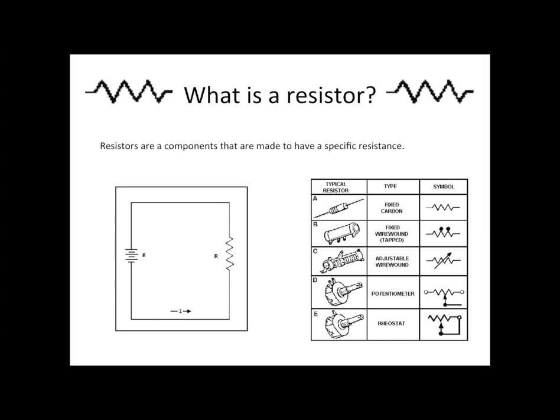If you look over on the right side here, we have different types of resistors. Fixed carbon is probably one of the most common ones you're going to run into. If you look over to the right of that chart, you can also see the different symbols that will represent those types of resistors on your schematics. You also have fixed wire wound, adjustable wire wound, potentiometer, and rheostat.